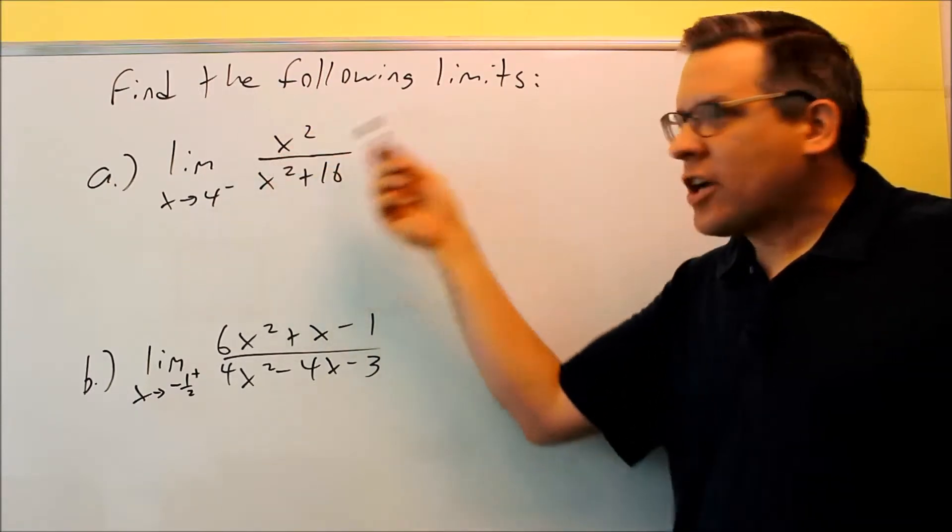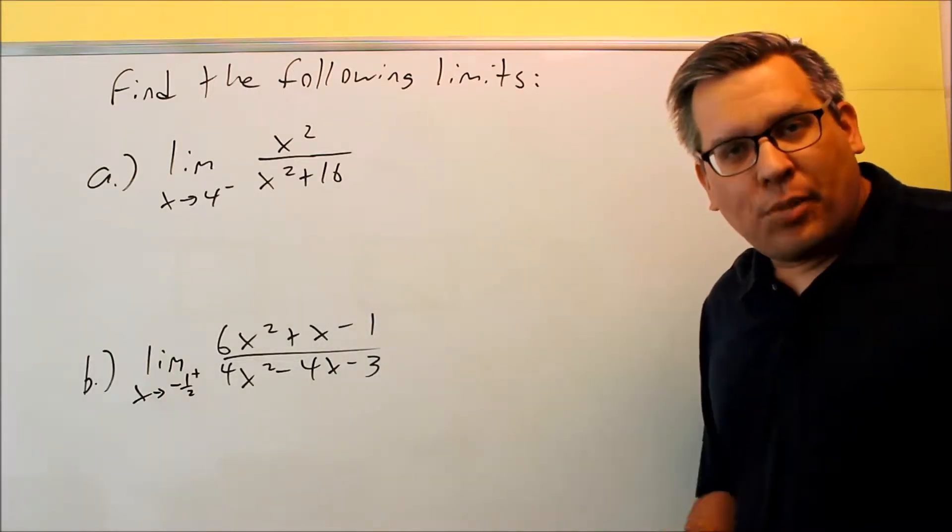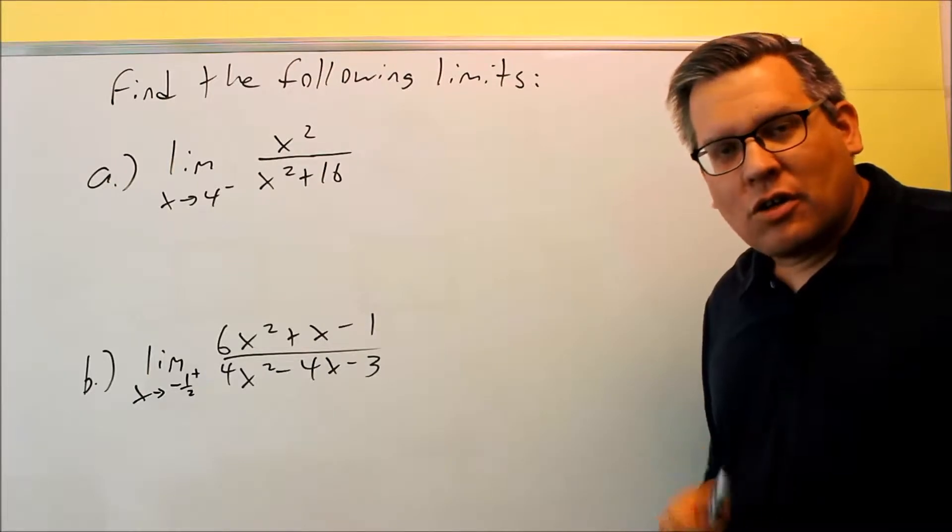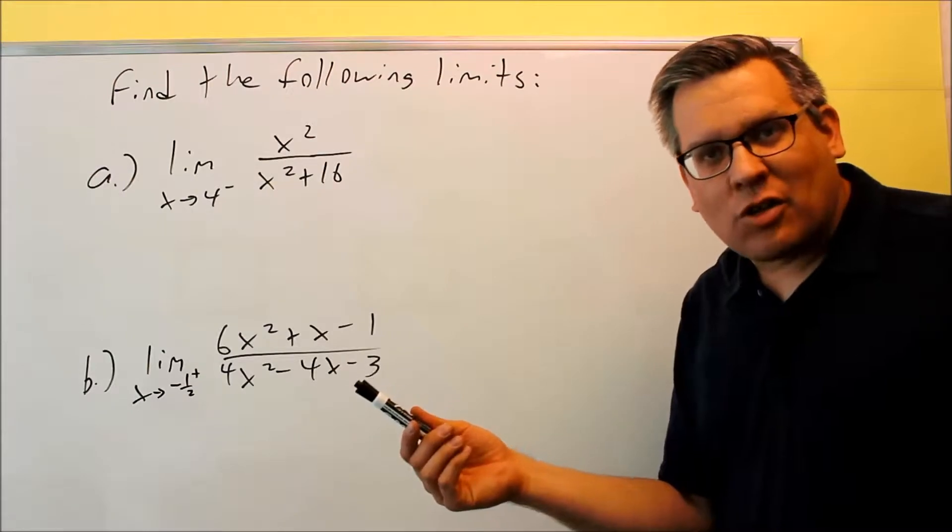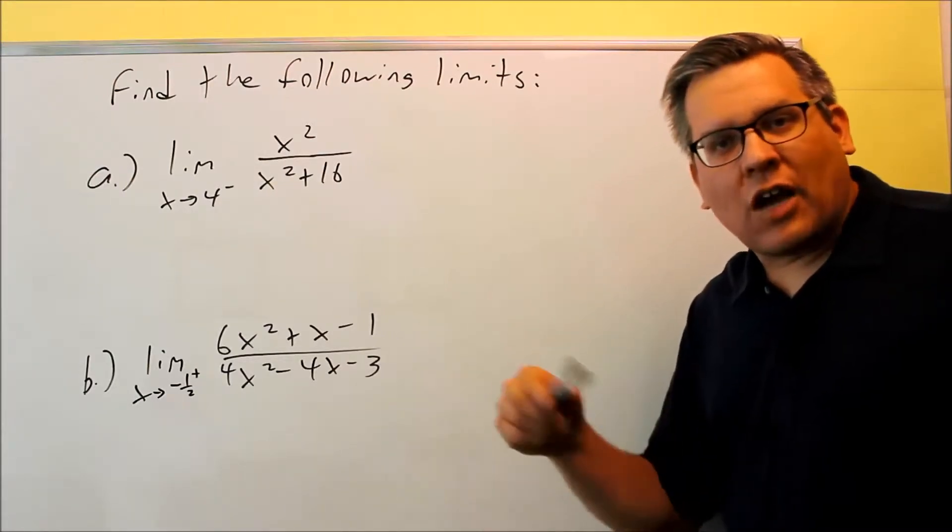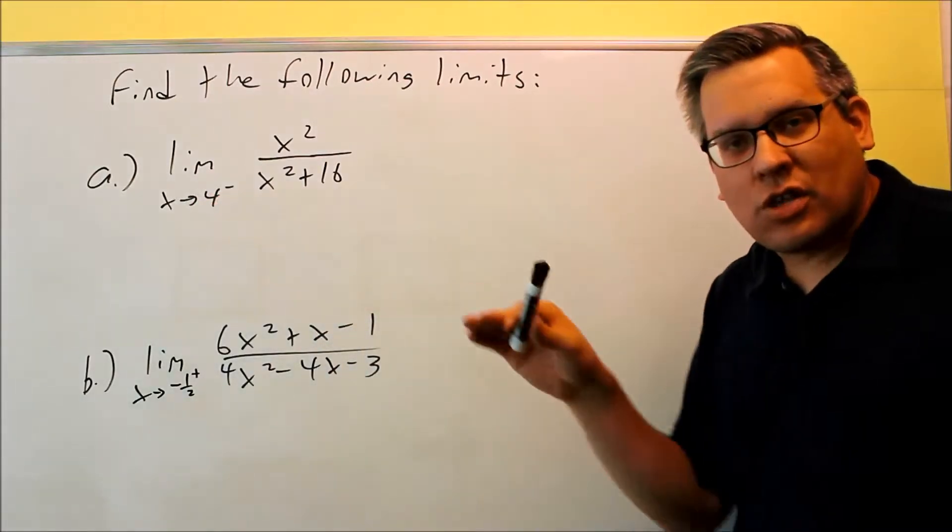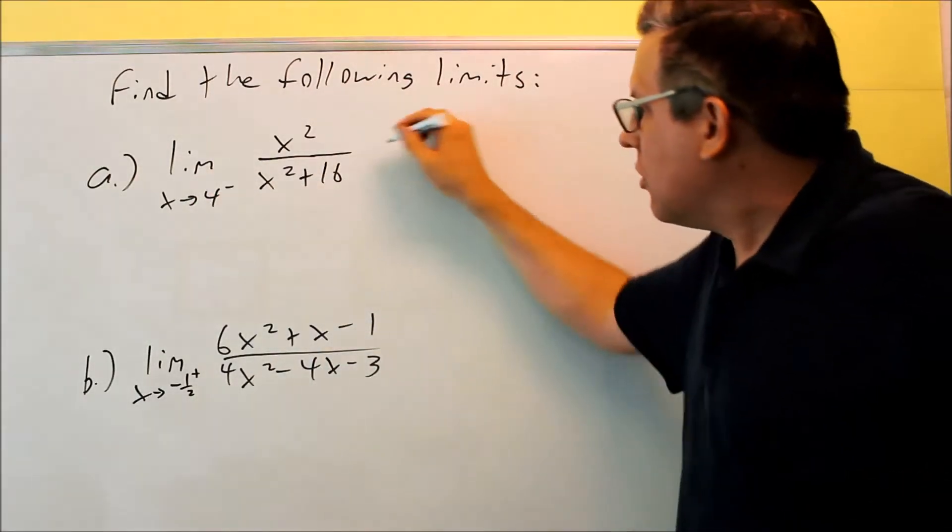In this case, we have a fraction that can't be simplified any further because I can't factor the bottom one. But if I plug four into here, I'm not going to be dividing by zero. So if I'm not dividing by zero, I don't have to pick a test number. Could I still do a test number and get the right answer? Yes, but you're going to have a little bit more work because you're going to be dealing with decimals. In this case, we don't have to use a test number because if I plug four in directly, I'm not dividing by zero.